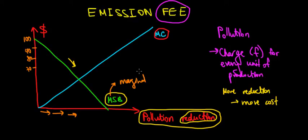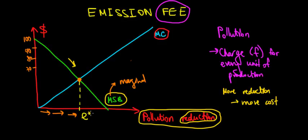What would be the optimal fee to charge the company? We know from regular micro that we have this relationship between marginals. In this case, we have the relationship between marginal cost and marginal social benefit, meaning we will have an optimal level of pollution reduction — let's call that the optimal emission reduction — at a certain amount, let's say $50.